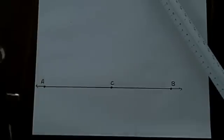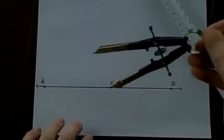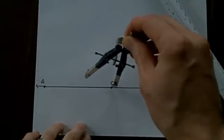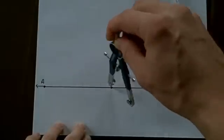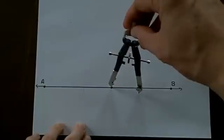After I have a point on this line, I take my compass, and I start at point C, and I'm going to mark where it crosses the line, both parts. All right. Now that I've done that,